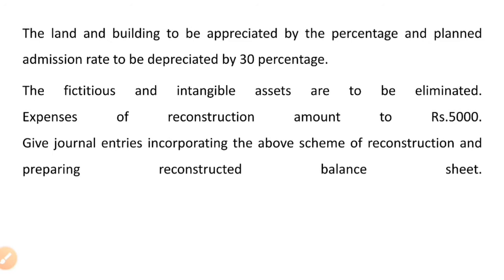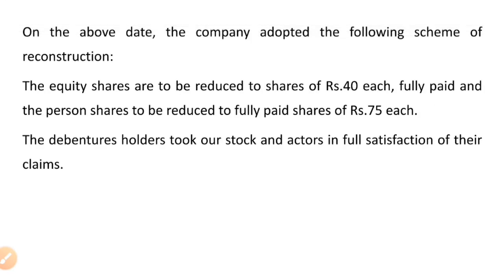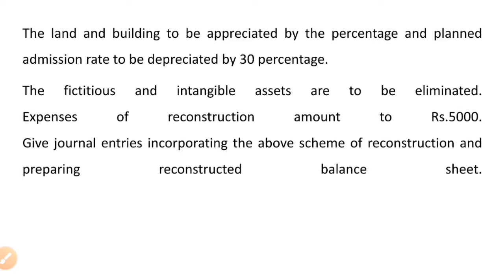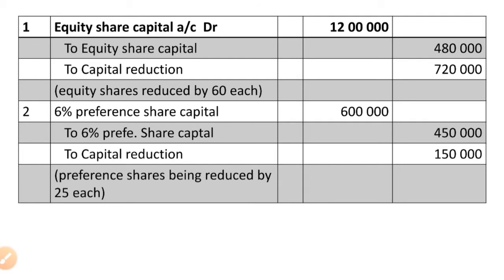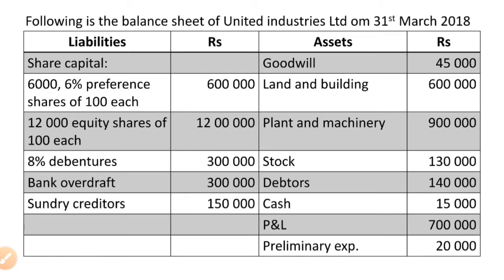So the question requires journal entries. The first journal entry will be for equity share capital reduction. The equity share capital will be reduced. The debenture holders will take stock and debtors. The equity capital per share is reduced — the first share capital at one price, we are reducing from Rs.100 to Rs.40.